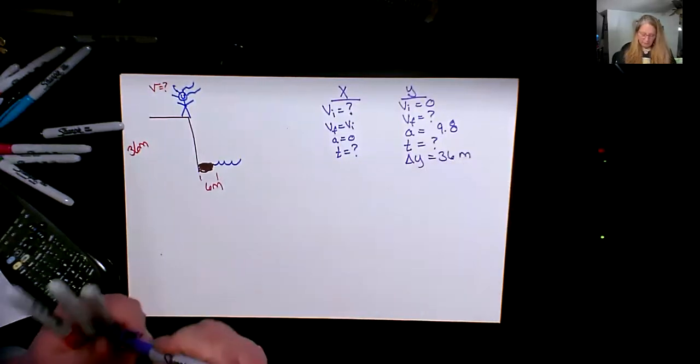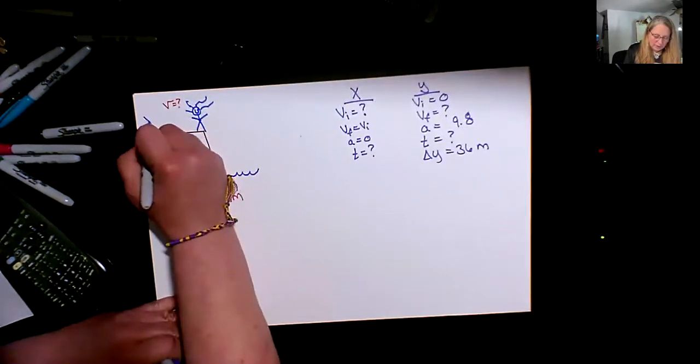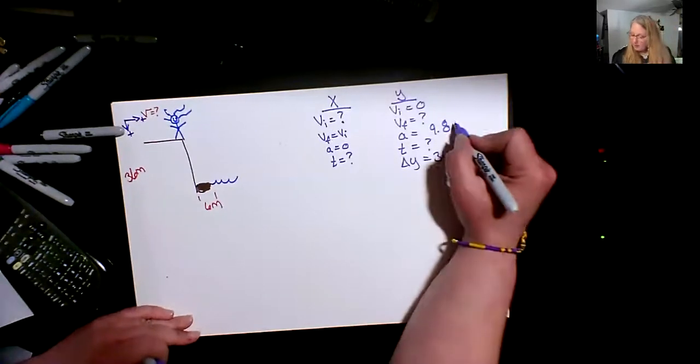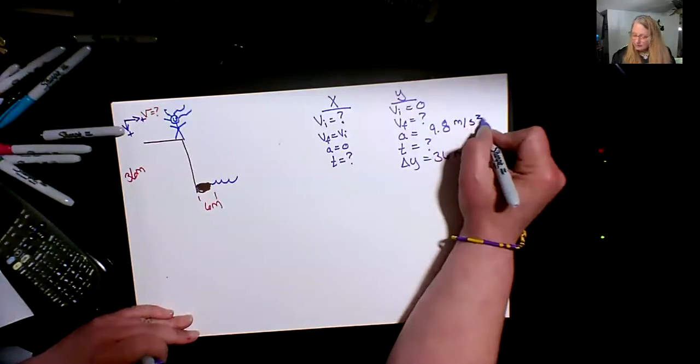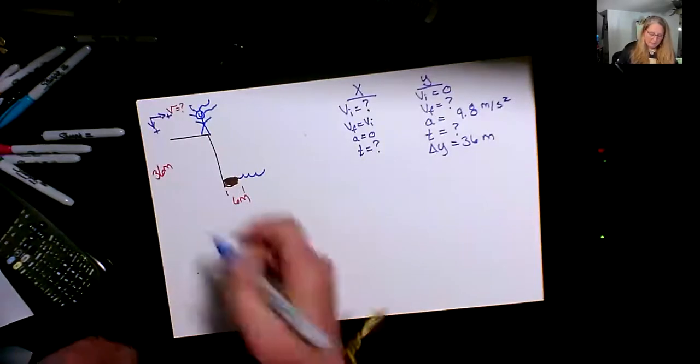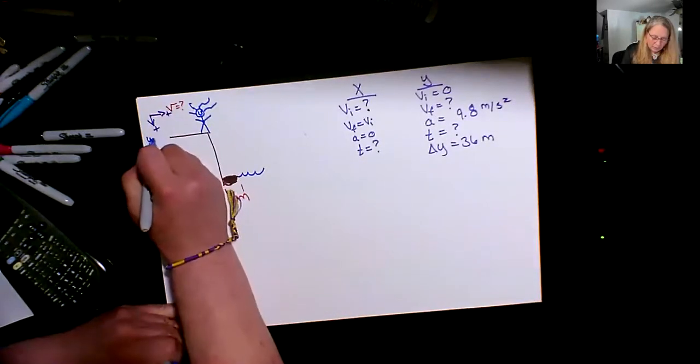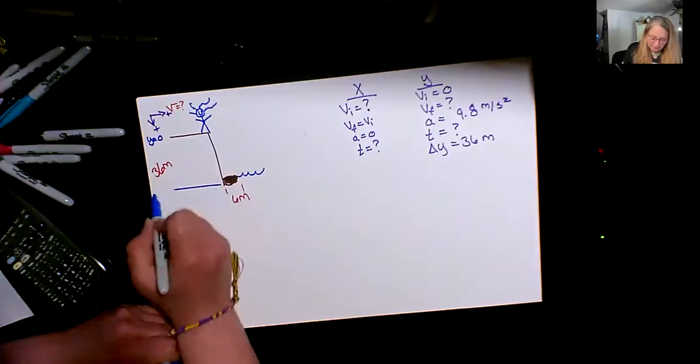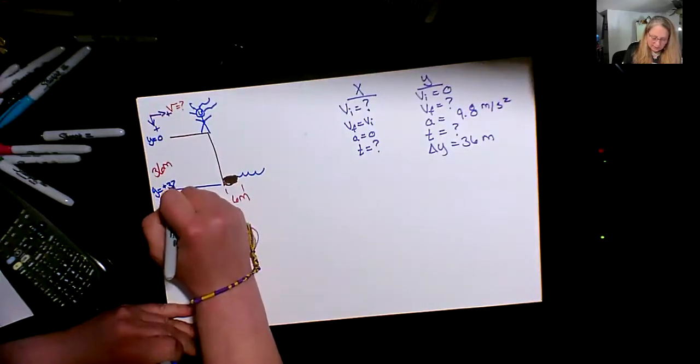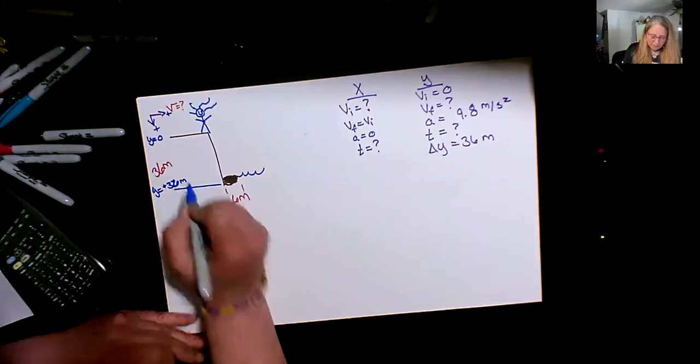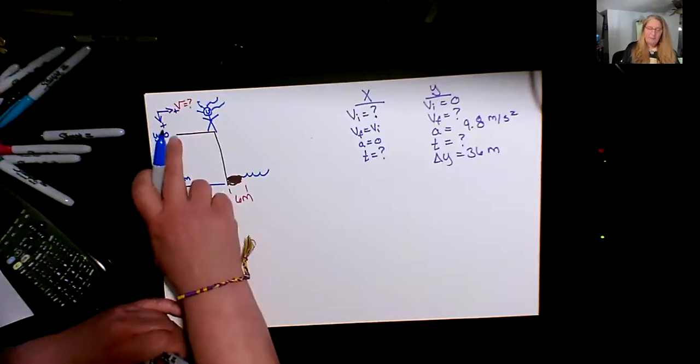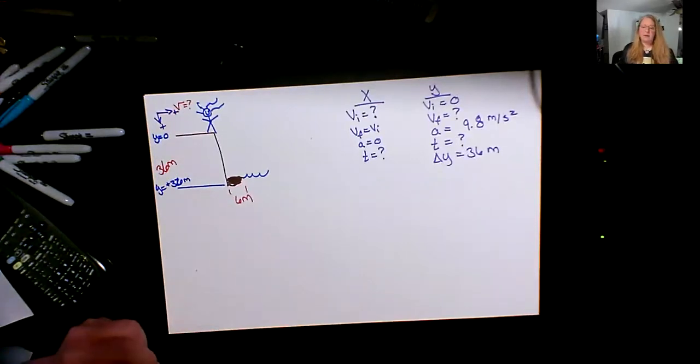And I'm going to do the same thing I did before just to make my life easier. I'm going to call down as positive and to the right as positive. So this will be a positive quantity. And just to reinforce what I did last time, that means that I'm calling this y equals zero. In this last spot down here, I'm calling y equals positive 36 meters. So this total height then my delta y is a positive value, final minus initial gives me a positive value.